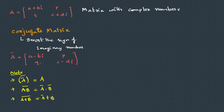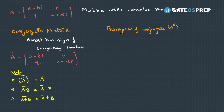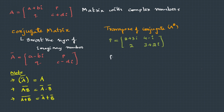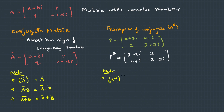There is one more operation called the transpose conjugate, written as A^θ. As the name suggests, we take the conjugate matrix and then apply the transpose. For example, matrix P with complex numbers gives P^θ by taking the conjugate and then transposing the elements. Key properties: (A^θ)^θ = A, and (AB)^θ = B^θ times A^θ — here AB becomes BA because of the transpose operation.